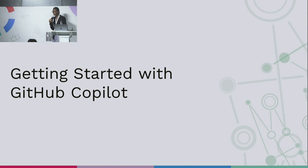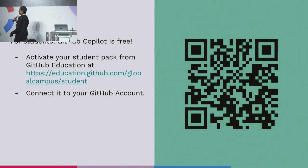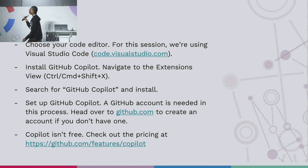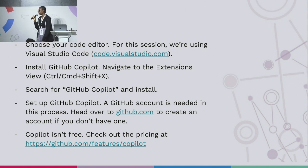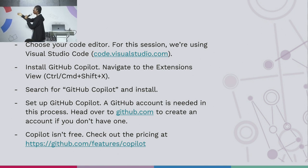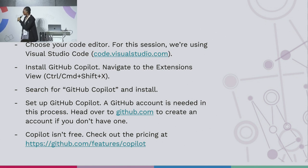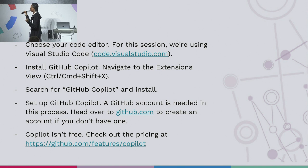We're getting to the demo session. How do you get started with Copilot? The first thing you have to do is, if you don't have Visual Studio Code, go to code.visualstudio.com to get it. Then install Copilot — go to your extension marketplace, install it, then set up Copilot. If you don't have a GitHub account, you can quickly create one for free. Copilot isn't free, but there's a free trial you can use — apply for the free trial and check it out.